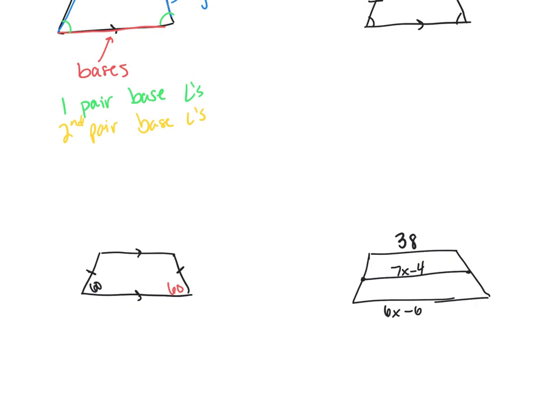So if I have 60 as that base angle, that means this base angle also has to be 60 because those are congruent. And then I look at how do I find this pair? Well, I know, remember we talked about yesterday, because these are parallel and this is kind of that transversal, I have same side interior angles so that these two have to add to 180, meaning that each of the blue angles has to be 120 degrees.